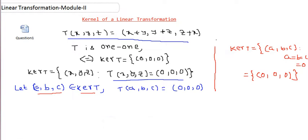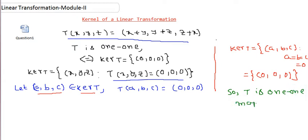Since the kernel of T contains only the zero vector, T is a one-to-one mapping. That is our first result. Now let's go to problem number two.